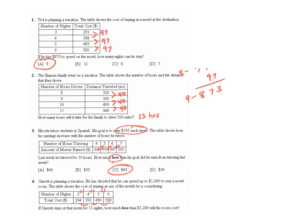So it looks like this first one has gone up by $98. And we want to make sure that that's what it's going up by each time. But it looks like it is $98 each time. So per night is $98 per night. It says if Garrett stays in the motel for 11 nights, how much less than $1,280 will the room cost?